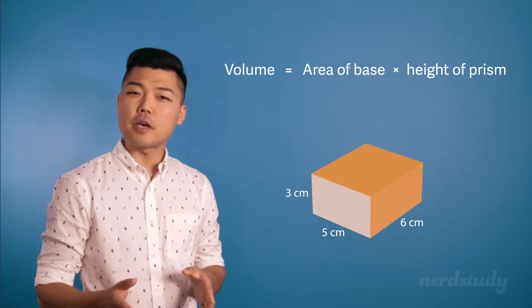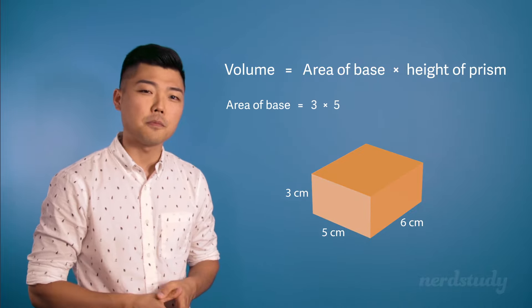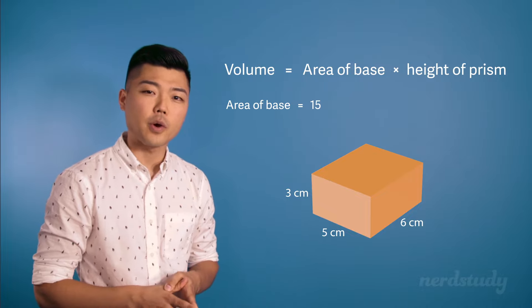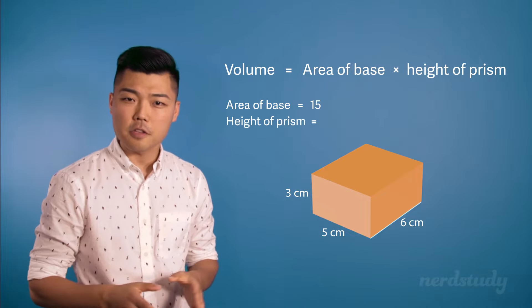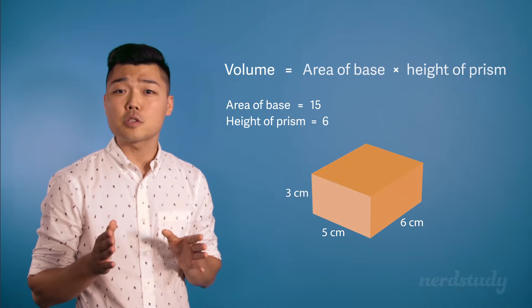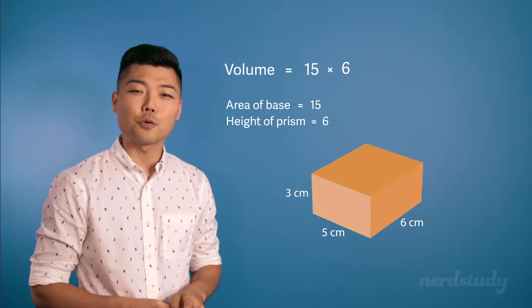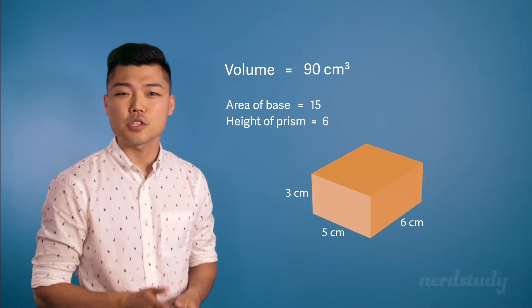The area of the base for this prism is simply 3 centimeters times 5 centimeters, which is 15 centimeters squared. The height of this prism is 6 centimeters. So all we need to do is multiply 15 by 6, making the volume equal to 90 centimeters cubed.